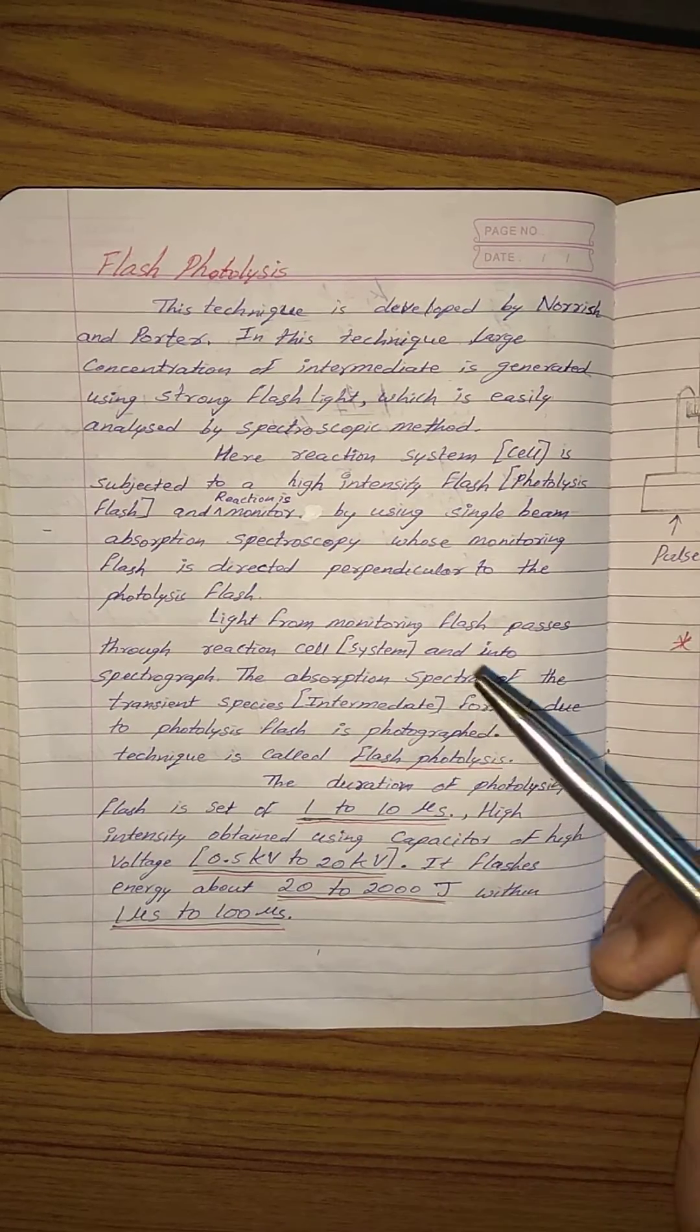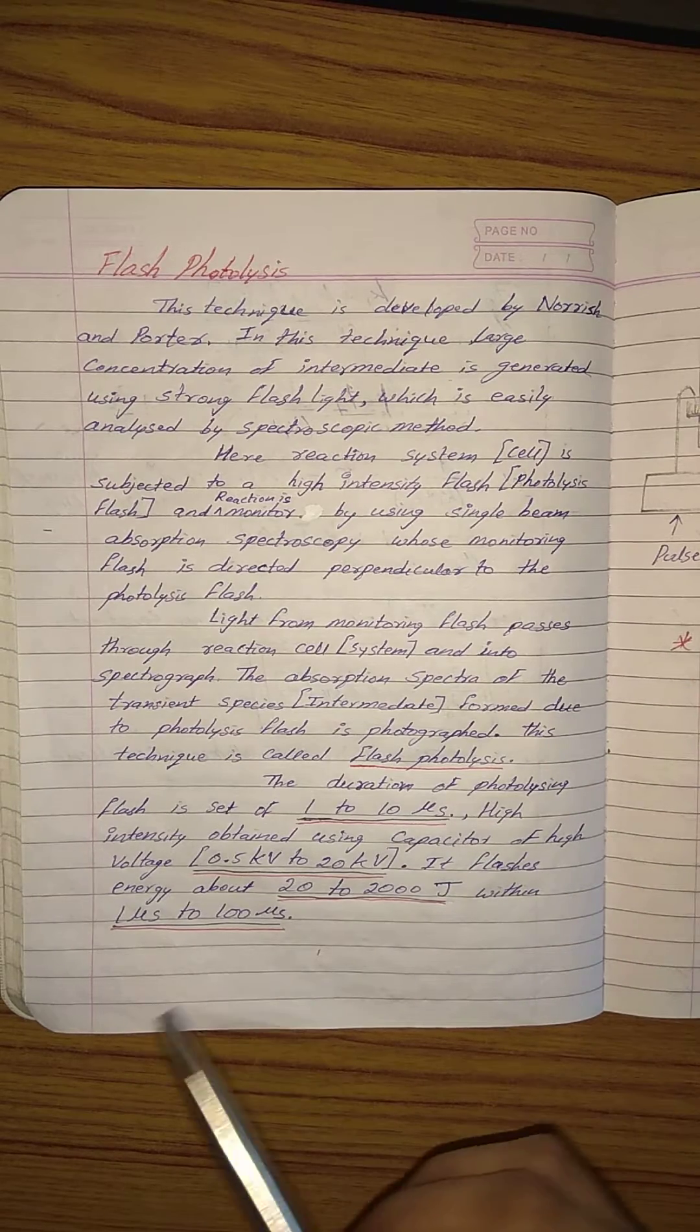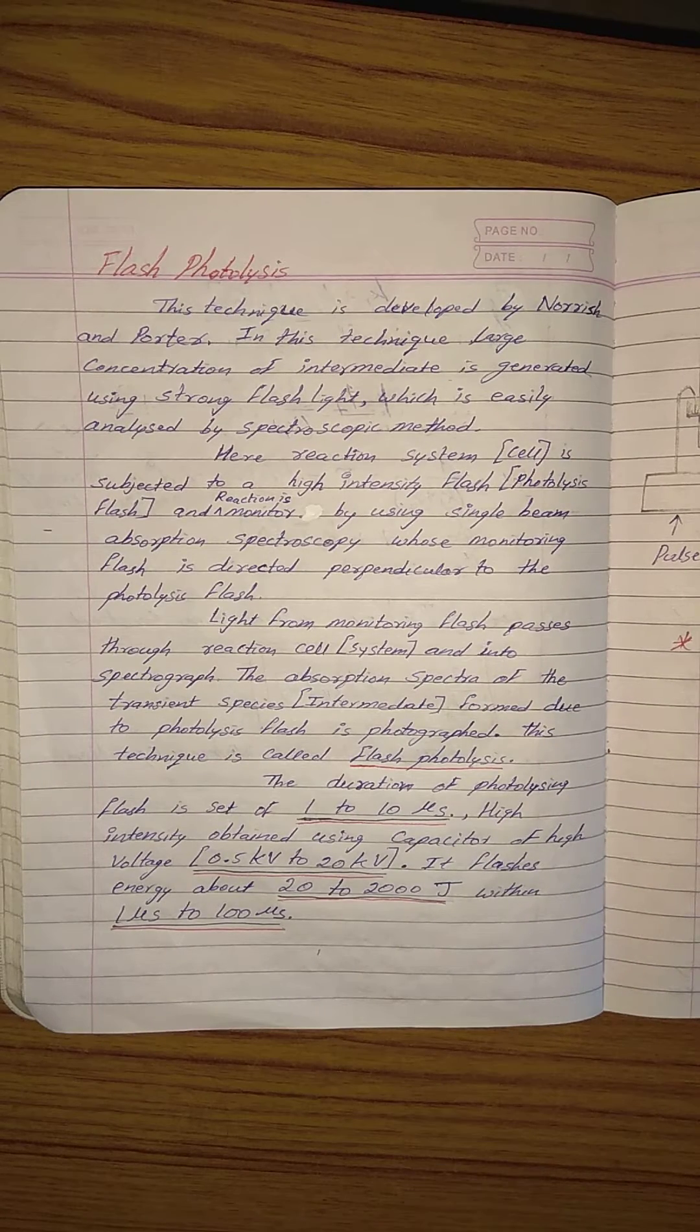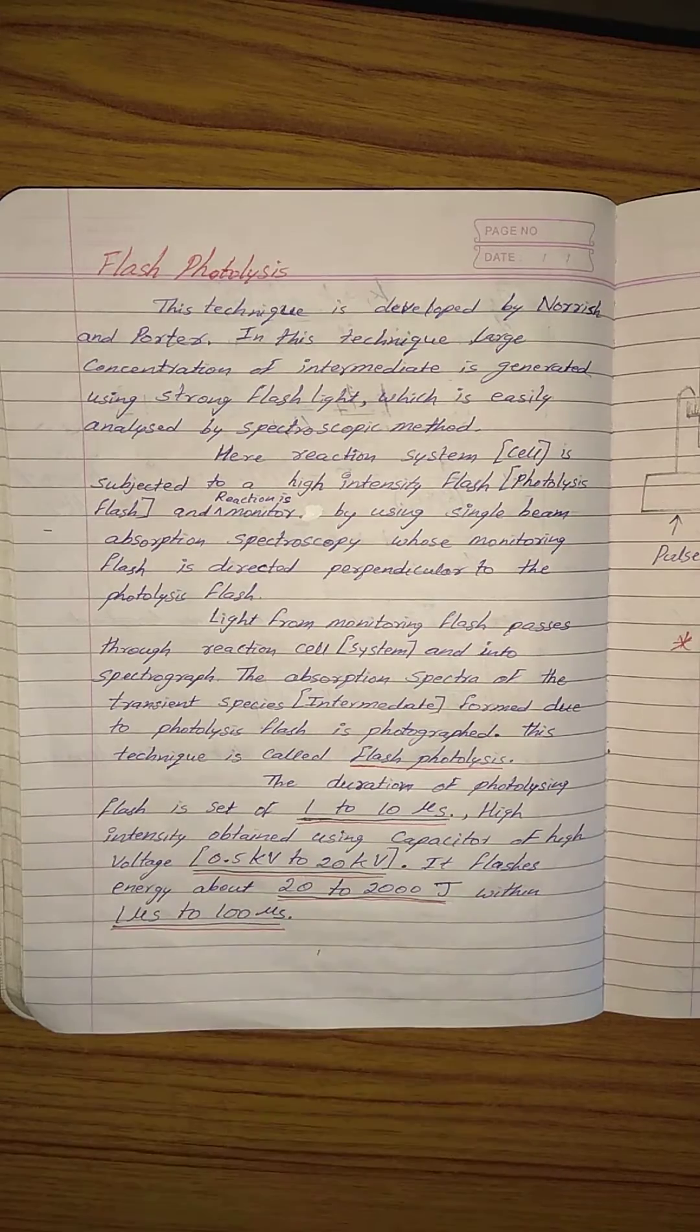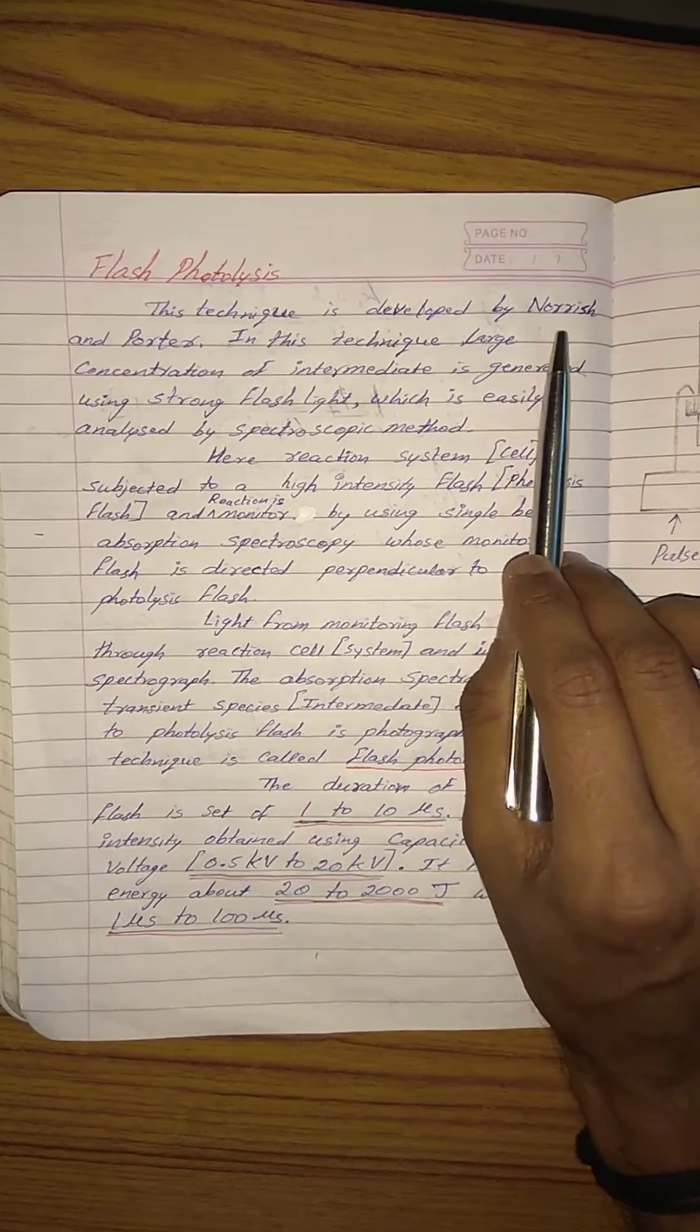These include singlet and triplet intermediates. To understand the quantity of singlet and triplet generated, we can use flash photolysis technique. It was developed by Norrish and Porter.